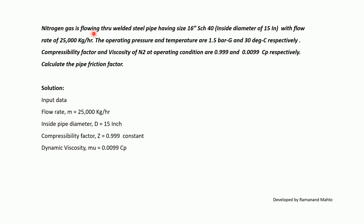Example problem: Nitrogen gas is flowing through a welded steel pipe of size 16" with 15-inch inside diameter, at a flow rate of 25,000 kg per hour. Operating pressure and temperature are 1.5 bar gauge and 30°C respectively. Compressibility factor Z = 0.999 and viscosity of N₂ = 0.0099 cP. Calculate the pipe friction factor.